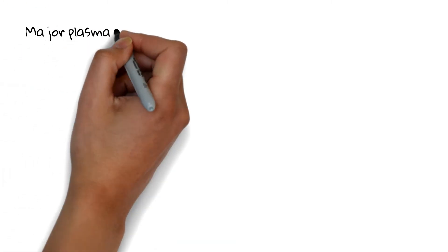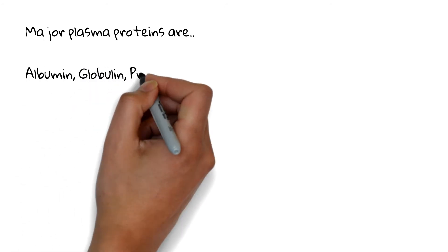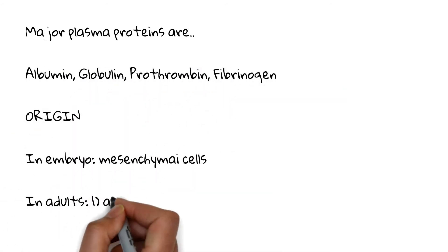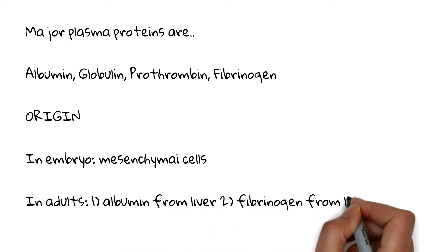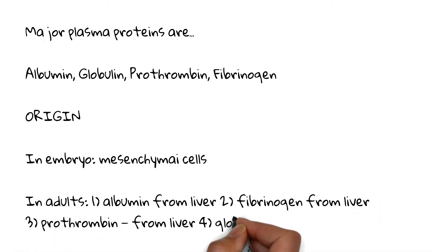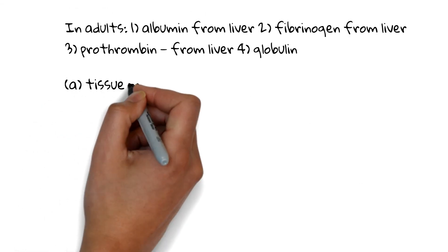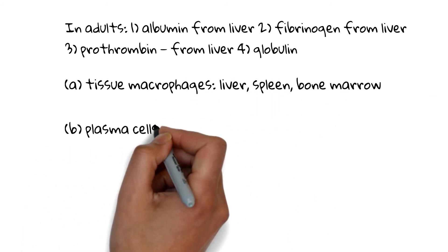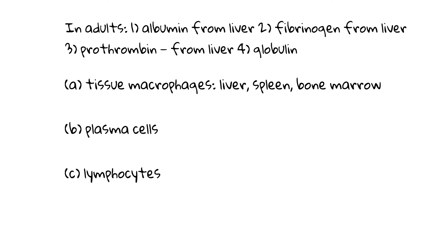The major plasma proteins are albumin, globulin, prothrombin, and fibrinogen. Their origin in the embryo is mesenchymal cells. In adults: No. 1, albumin from the liver; No. 2, fibrinogen from the liver; No. 3, prothrombin from the liver; and No. 4, globulin from tissue macrophages, liver, spleen, bone marrow, plasma cells, and lymphocytes.